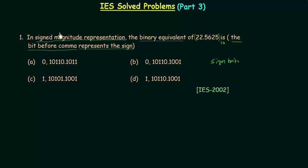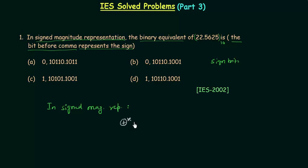In this problem we have to deal with signed magnitude representation. In signed magnitude representation, if we want to represent a positive number, we have to make the MSB — the most significant bit — equal to 0. And if we want to represent a negative number, we have to make the MSB equal to 1.